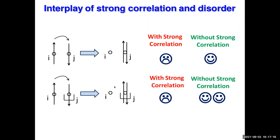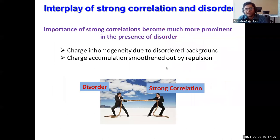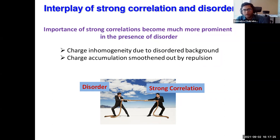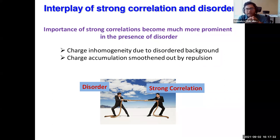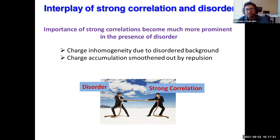This is very hand-waving, but physically: charge distribution gets inhomogeneous if you have disorder, whereas strong correlation wants to smoothen out this disorder — if you have charge piled up at one place, it doesn't want electrons to be together and wants to homogenize the system. So strong correlation and disorder will try to compete with each other.